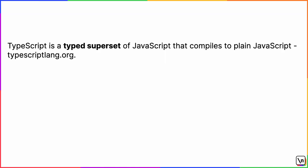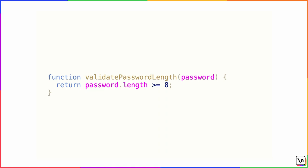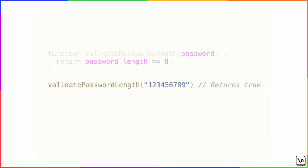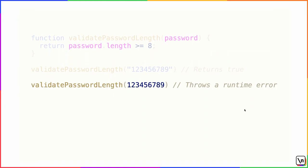What is TypeScript? TypeScript is a typed superset of JavaScript that compiles to plain JavaScript. TypeScript allows you to specify types for values in your code, so you can develop applications with more confidence. Consider this JavaScript example: a function that verifies a password has at least 8 characters. When you pass a string with at least 8 characters it returns true. But someone might accidentally pass a numeric value, and you won't see any problems until you try to run the application — the code will crash.